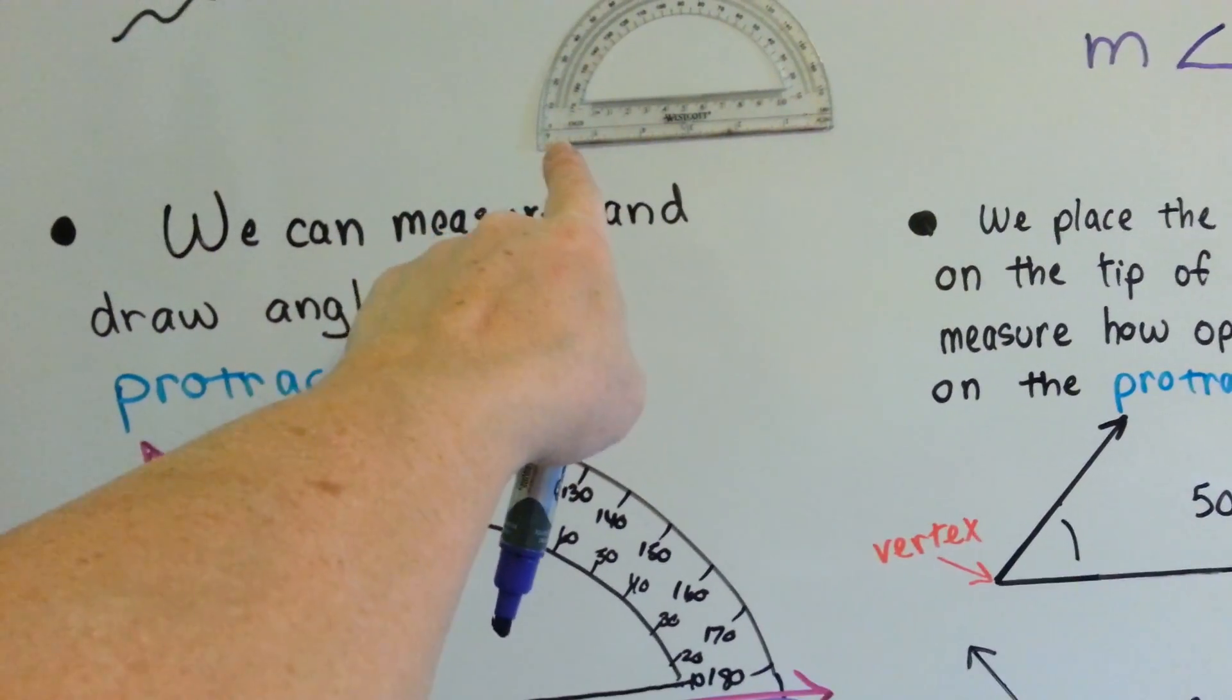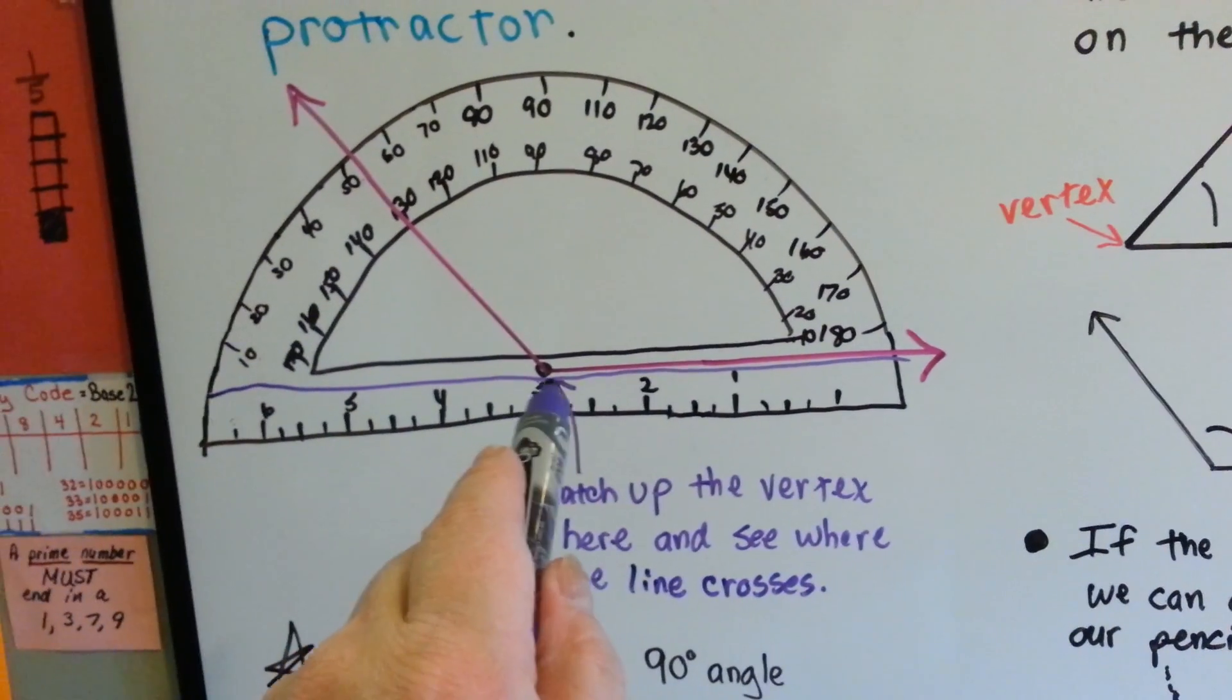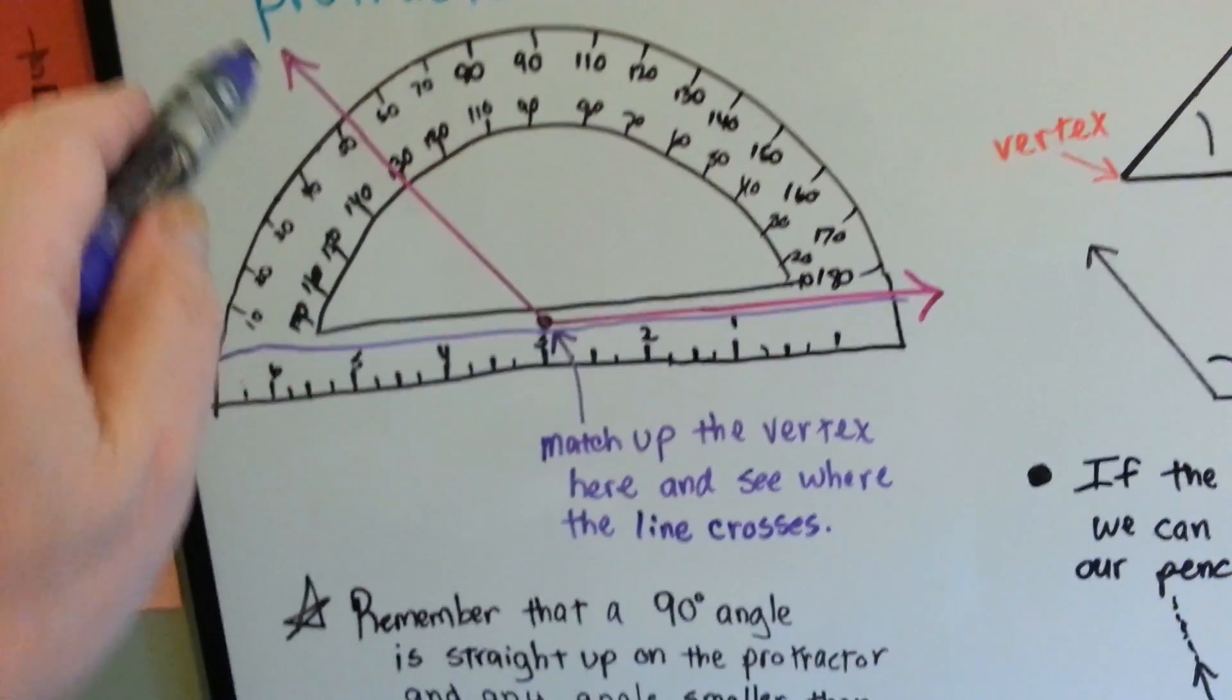So one ray gets matched up along that, and then the other ray is going to shoot up out of the protractor like this.